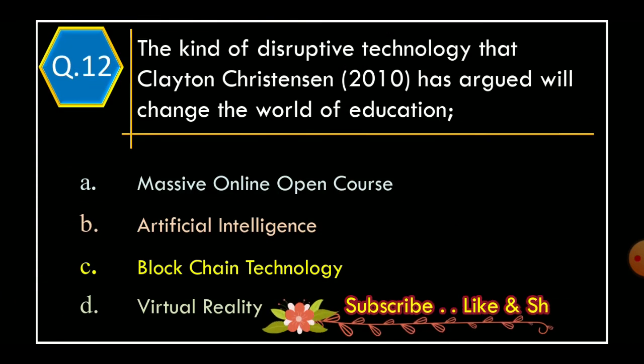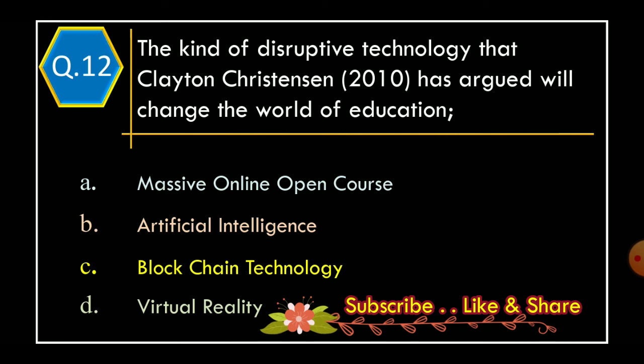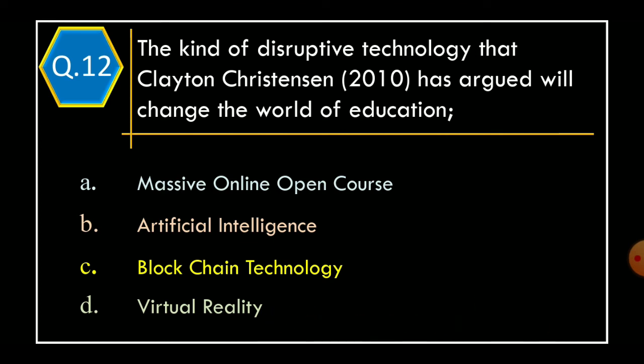Question 12. The kind of disruptive technology that Christensen (2010) argued will change the world of education: Option A: Massive Online Open Course. Option B: Artificial Intelligence. Option C: Blockchain Technology. Option D: Virtual Reality. The correct option is Option A: Massive Online Open Course.